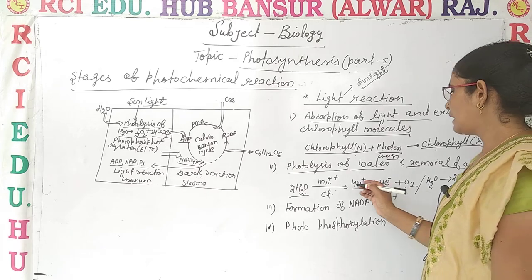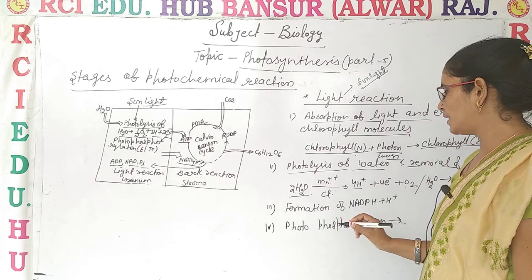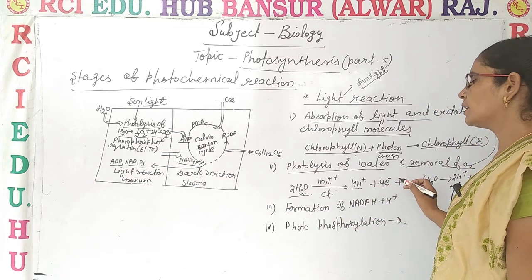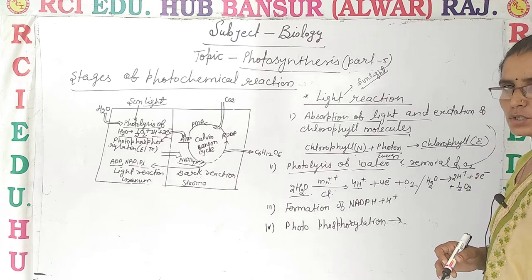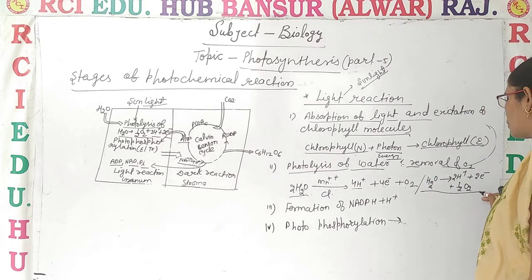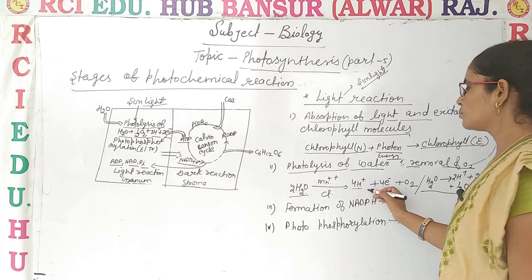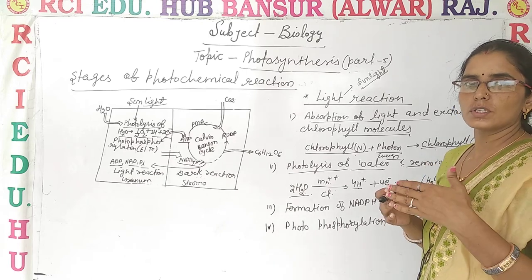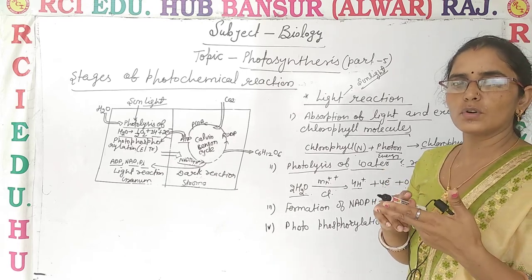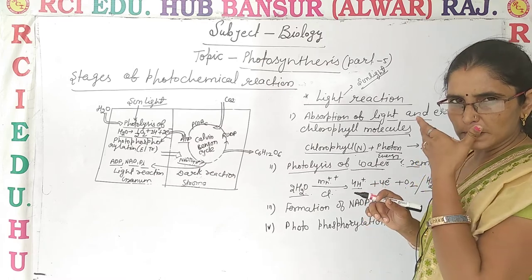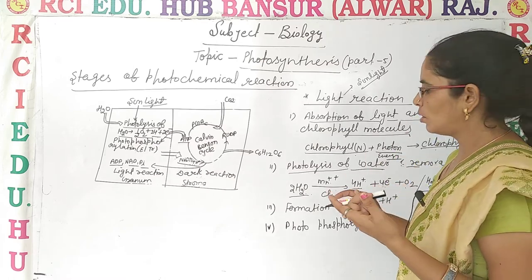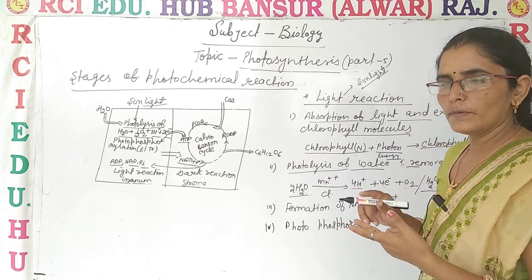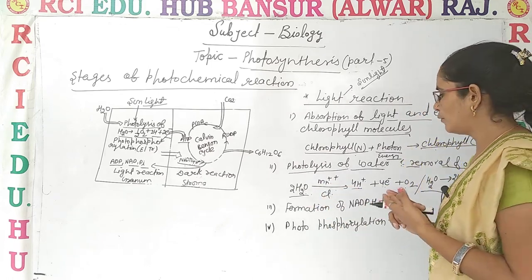Two molecules of water are split, releasing four protons, four electrons, and one molecule of oxygen. If you are confused: when one molecule of water dissociates, two protons, two electrons, and half a molecule of oxygen are produced. When two molecules of water are split, four protons, four electrons, and one molecule of oxygen are released.